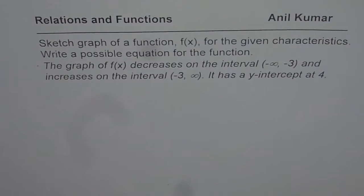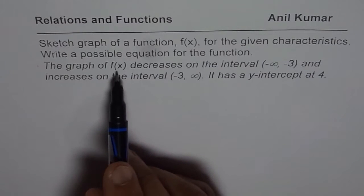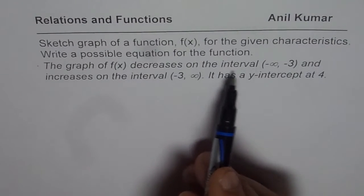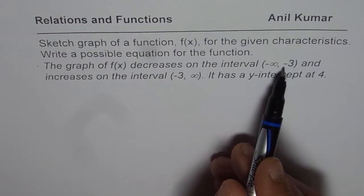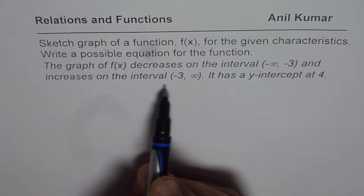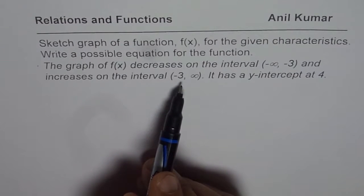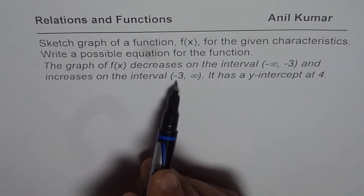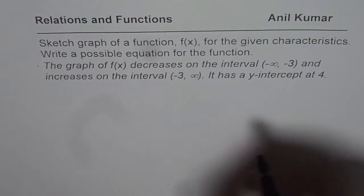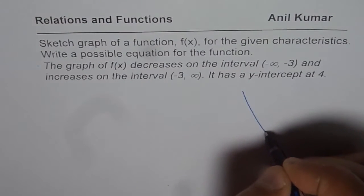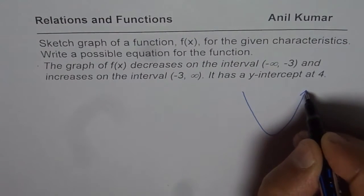Now let us try to sketch first. The graph of a function decreases on the interval (-∞, -3) and increases on this interval. That means it has a turning point at x equals -3. The simplest graph which meets this is a parabola. It is decreasing and then increasing, so let me sketch a parabola.